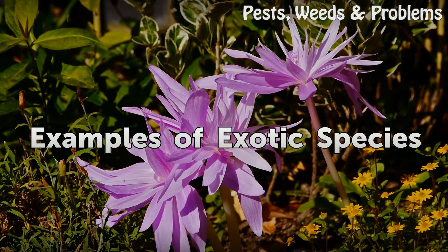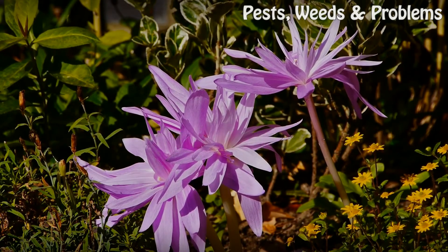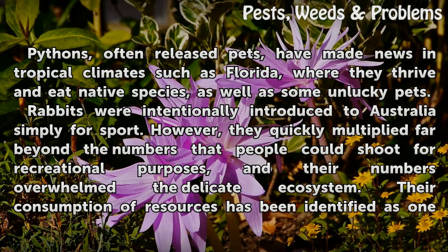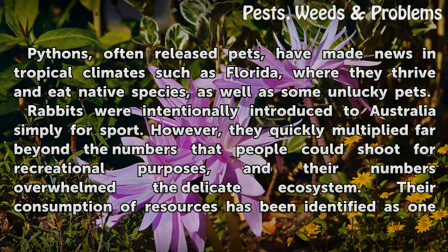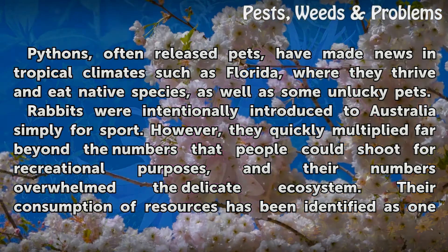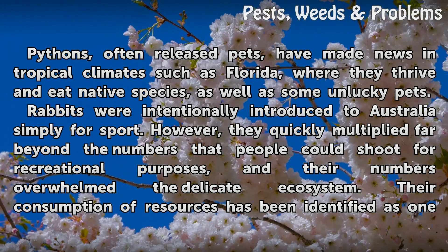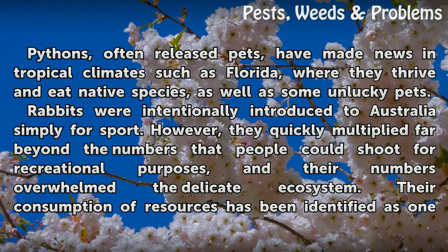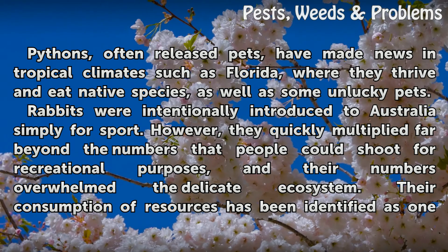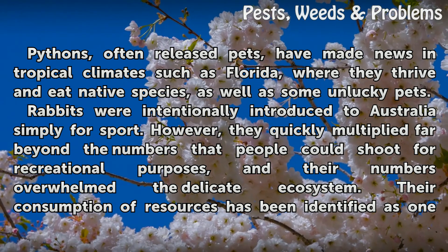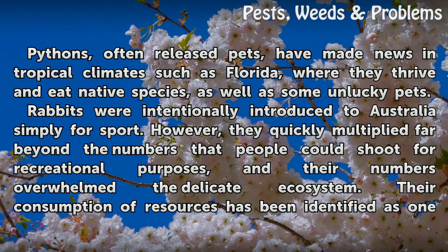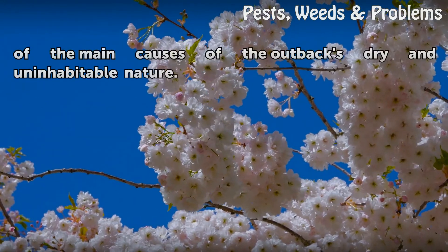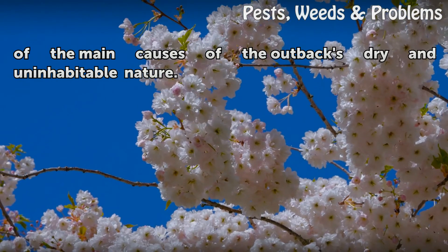Examples of Exotic Species. Pythons, often released pets, have made news in tropical climates such as Florida, where they thrive and eat native species. Rabbits were intentionally introduced to Australia simply for sport. However, they quickly multiplied far beyond the numbers that people could shoot for recreational purposes, and their numbers overwhelmed the delicate ecosystem. Their consumption of resources has been identified as one of the main causes of the outback's dry and uninhabitable nature.